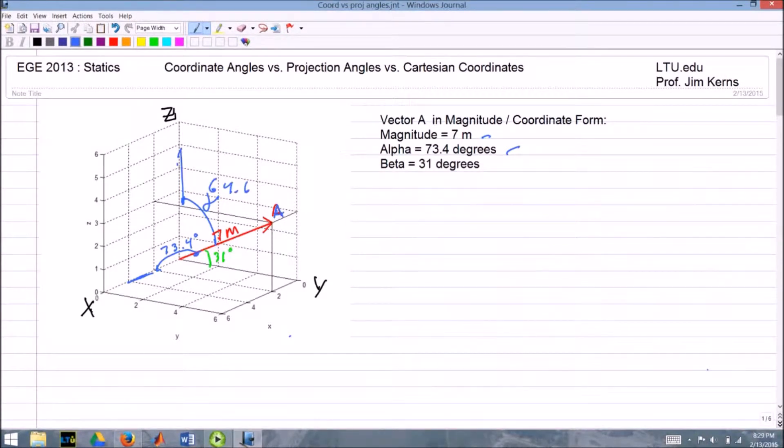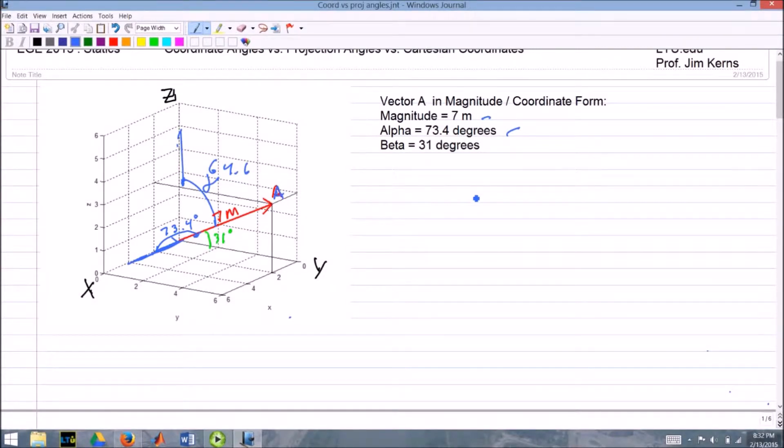Now we have our vector. To make it useful, we'll typically convert it into Cartesian coordinates. I have the x-axis here, vector A, and an angle between them of 73.4. I can find the x value: x equals magnitude A times cosine of 73.4. I can repeat that process for the y and z-axis.